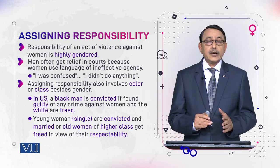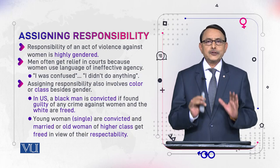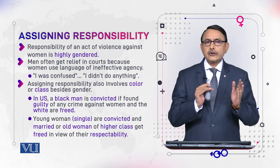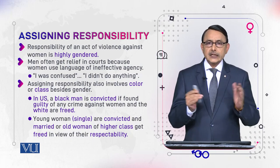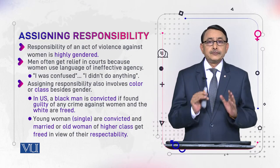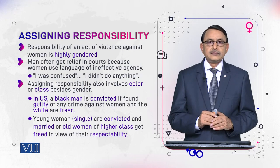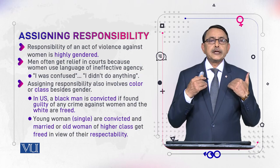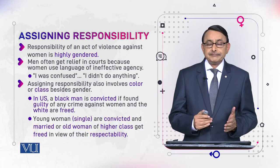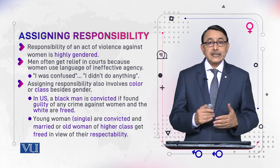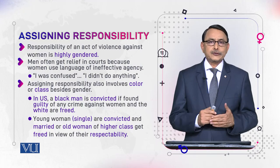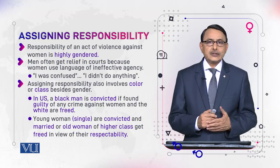Up to this point our discussion was confined only to gender — that responsibility is assigned on the basis of being male or female. But sometimes the class and colour of the person involved also matters. In the US, for example, if the criminal is a black male, they would be made responsible for the act of violence against women. And if women are young and single, they would be made responsible. But if they are mature, older, and belong to a higher class of society — elites — they are never made responsible for any offence.